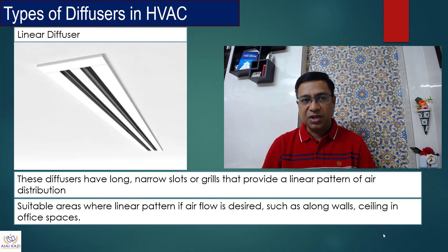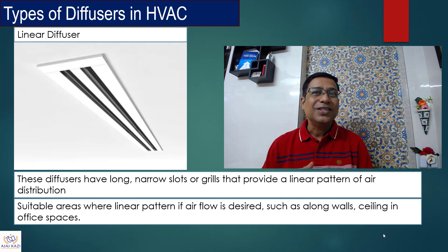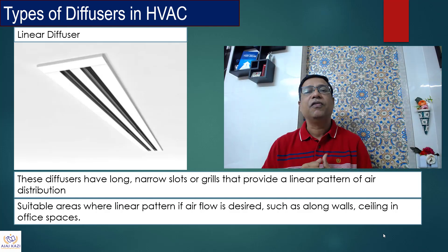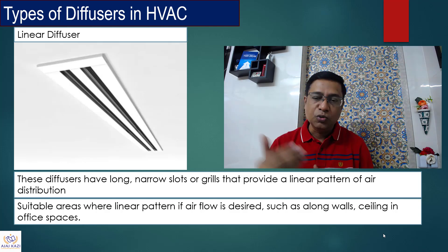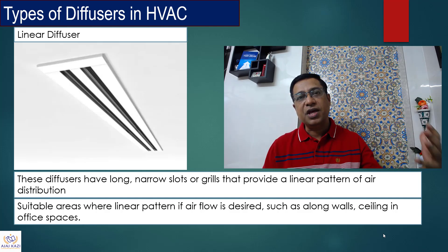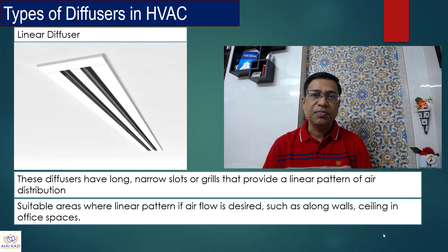The first important diffuser in HVAC is a linear diffuser. These are long narrow slot grills that provide a linear pattern, so you will have linear airflow coming down from these slots to the space where it is to be conditioned. These are generally used along the walls — you can see the picture here — mostly in the ceiling and generally for office applications. You will have these in individual offices or common areas and cabins, giving a linear pattern of air that cools or conditions that space.